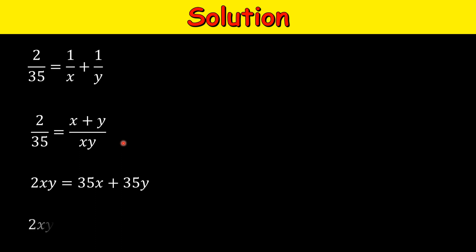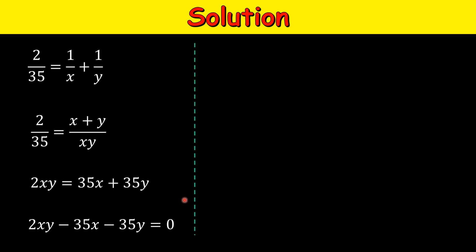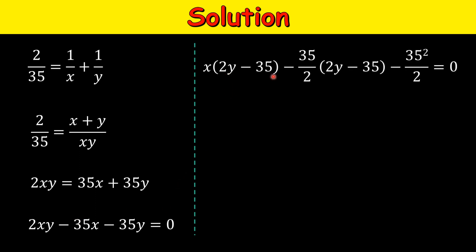Now let's bring everything to one side and keep just zero on the right. Our goal is to do the factorization — we want a product of different factors on one side and some value on the other. In the first two terms, x is common, so we take x out to get x times (2y minus 35). Our goal is to find (2y minus 35) in the second term as well, which was minus 35y. If we factor out minus 35 over 2, we get the desired (2y minus 35).